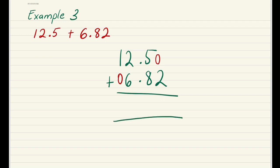0 plus 2 is 2, 5 plus 8 is 13. We're going to put a 3 here. Remember to always bring down the decimal points. So for the 13, the 1 carries over to the next number. So 1 plus 2 is 3, 3 plus 6 is 9, and then 1 plus 0 is 1. So for the question 12.5 plus 6.82, our answer is 19.32.